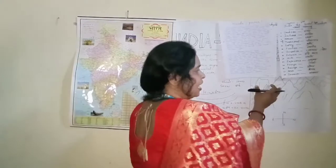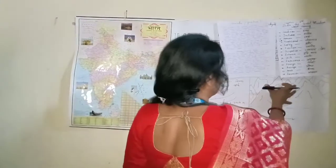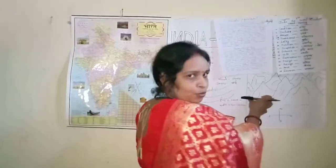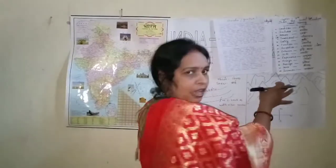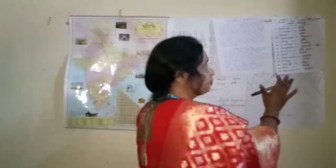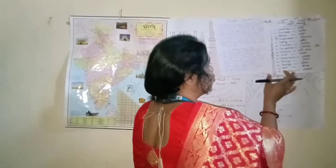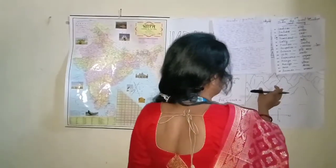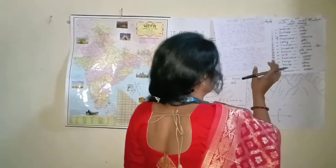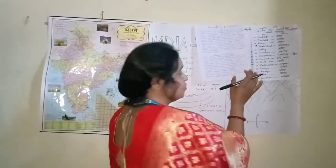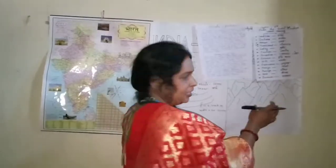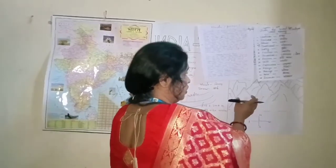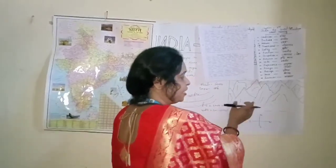You have now learned about Himadri. It is shown as the greatest, topmost range. It is always covered in snow. Kanchenjunga and Mount Annapurna are found here. Its height is around 6000 meters. This is Himadri.